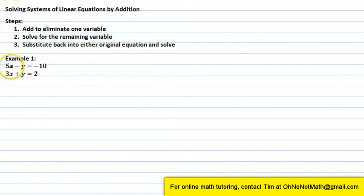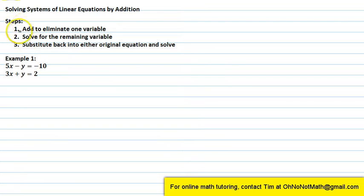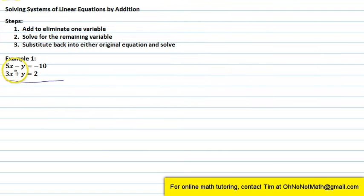Let's do an example. We have 5x minus y equals negative 10, and 3x plus y equals 2. Step one tells us to add the two equations together to eliminate one variable. So let's add these two equations together.